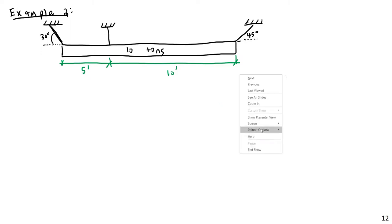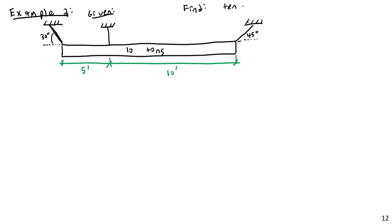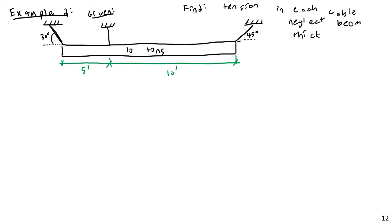I task us with finding the tension in each cable. So we have three cables — probably strong steel cables — holding up this big 10-ton steel beam. The first step is to draw a free body diagram. Because the thickness doesn't matter, I'll draw the beam as a simple line element.